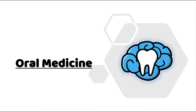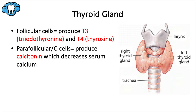Hey everyone, Ryan here, and welcome back to our oral medicine series. This video is going to be about thyroid diseases. Undiagnosed or poorly controlled thyroid disorders in a patient who presents for dental treatment is a cause for concern in many ways, and we'll discuss why. The thyroid gland produces three hormones: T3, which is triiodothyronine; T4, which is thyroxine; and calcitonin.